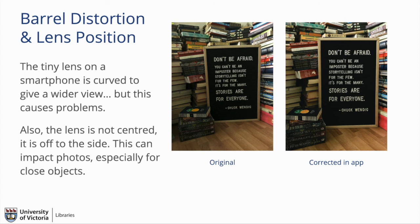Barrel distortion can change how your face appears in selfies versus regular photos, or even in vertical versus horizontal selfies. You notice this in group photos when some people look at the screen versus looking toward where the actual camera lens is, so people's eyes end up pointing in different directions. Here you can see how barrel distortion makes this sign look like it's leaning forward — and then using an app adjustment to fix the barrel distortion makes it straight again. There is a bonus activity that shows you how to do that, and it's something to be aware of when taking smartphone photos.